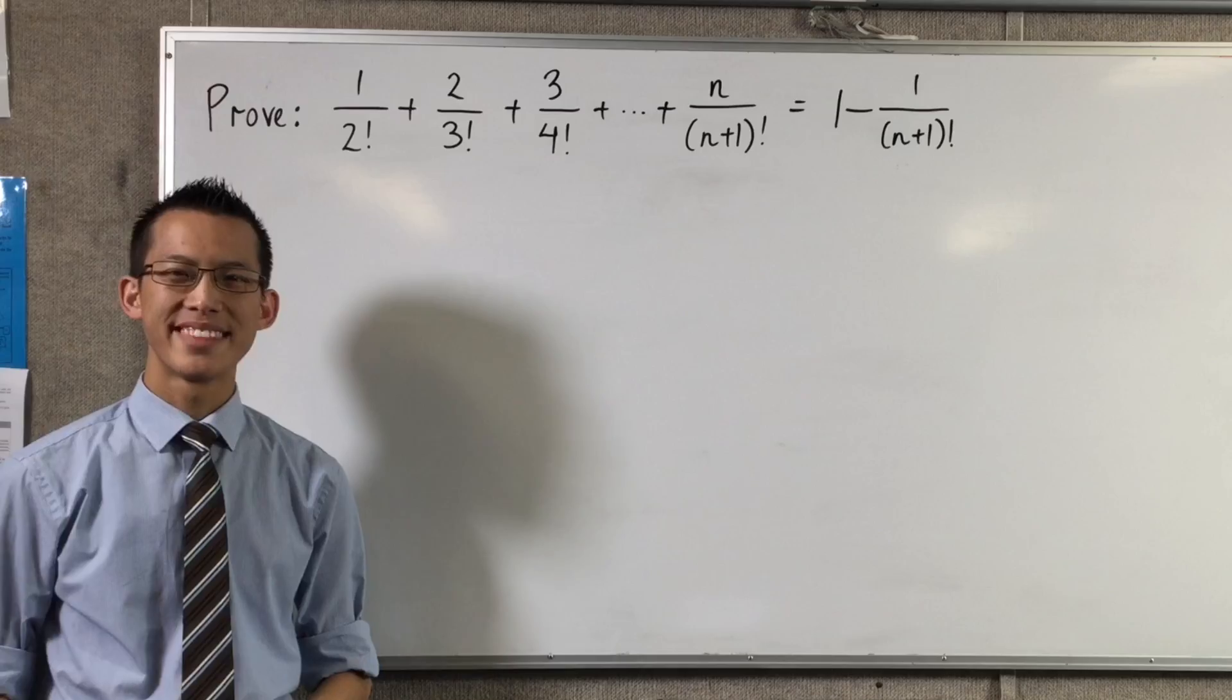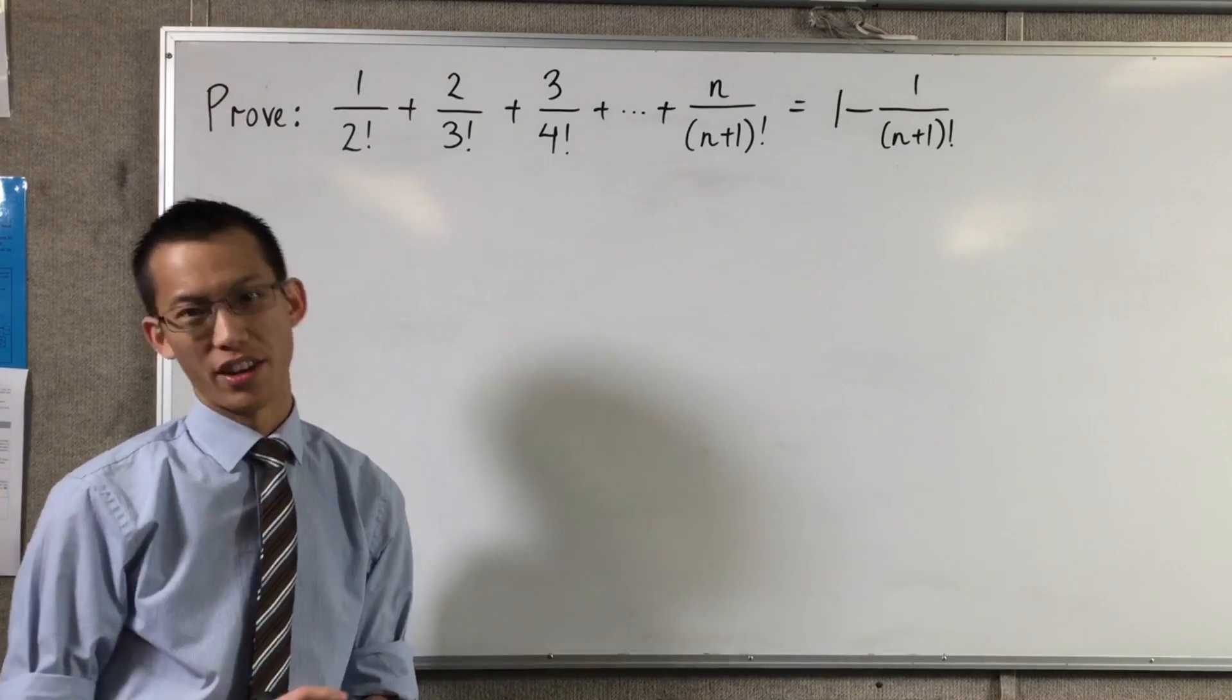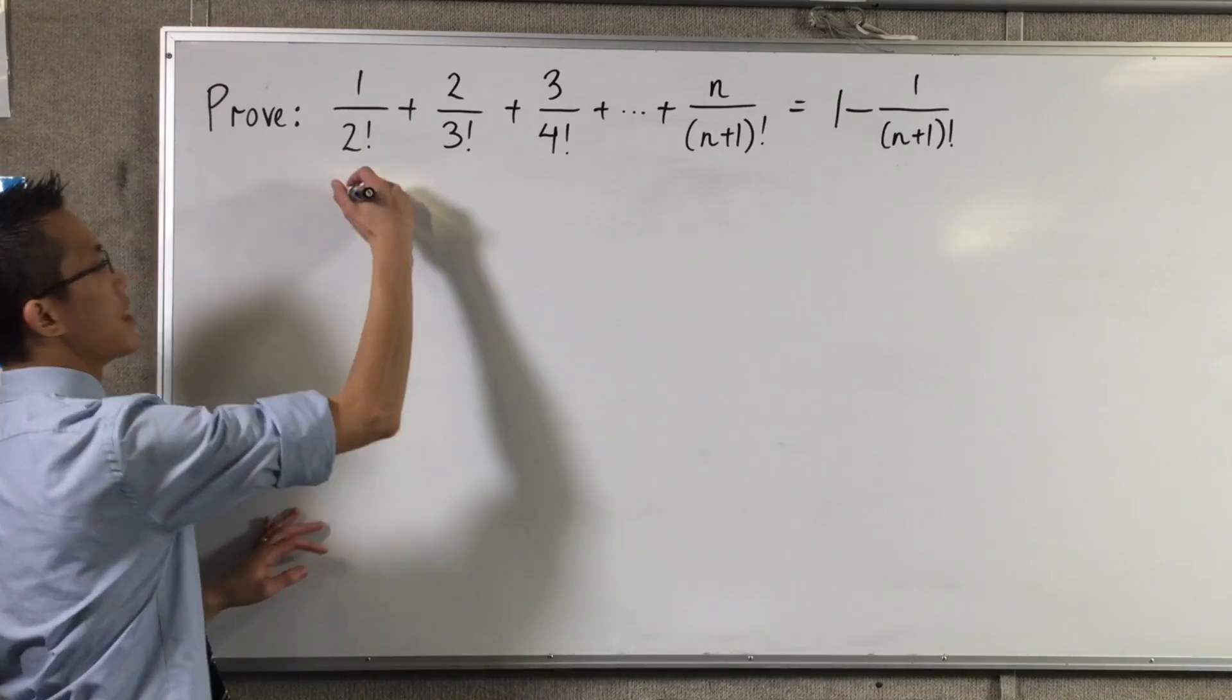But on occasion, it may start at n equals 2 or some other value. Don't just guess. Read the question. Substituting the value into each side independently is the best way to go. First, we'll go with the left-hand side.